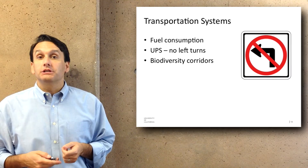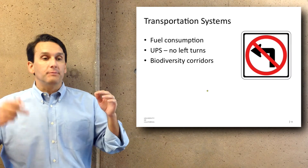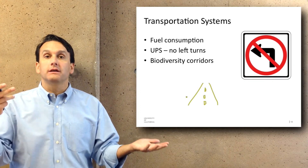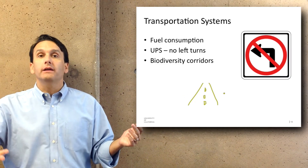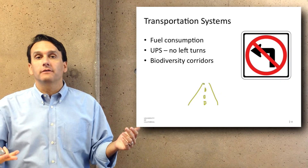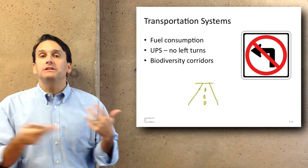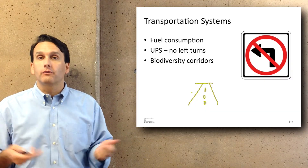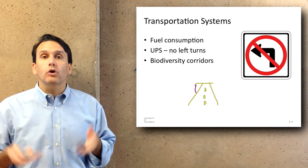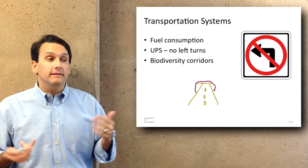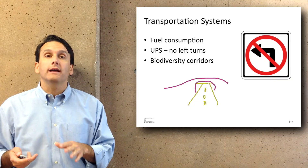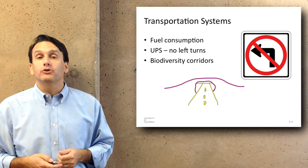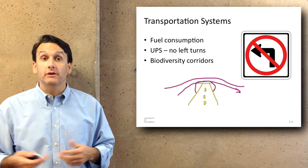Another issue with transportation systems is how they disrupt ecosystems. If you put a large highway across a section of forest, the animals and plants on one side may not be able to breed with those on the other side. This can potentially create different species on different sides of the highway if enough time passes. There is work afoot to create biodiversity corridors — effectively underpasses for animals that go under freeways — allowing organisms to move from one side to another, hopefully reducing some of the effects of freeways crossing various habitats.